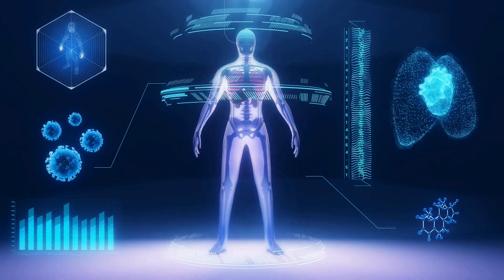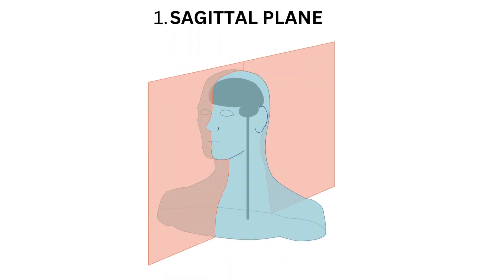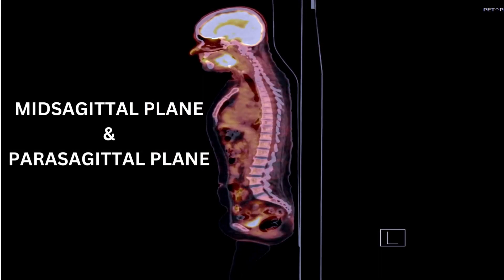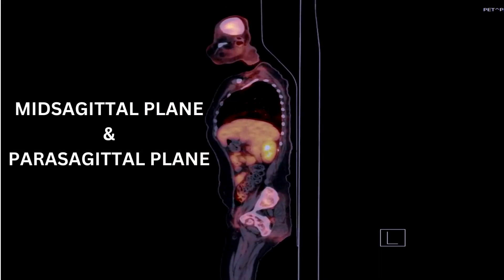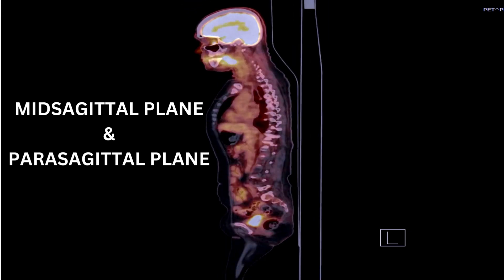The three primary planes of section are: 1. The sagittal plane — a vertical plane that divides the body into left and right portions. The midsagittal plane runs exactly through the midline, creating equal left and right halves, while parasagittal planes are off-center.